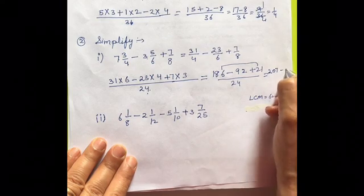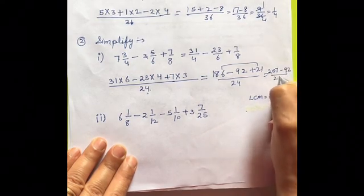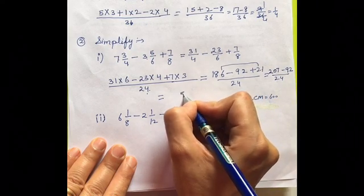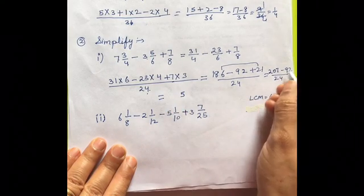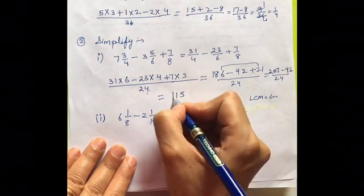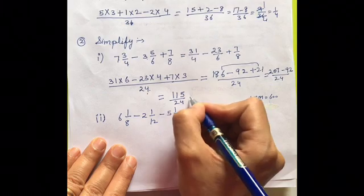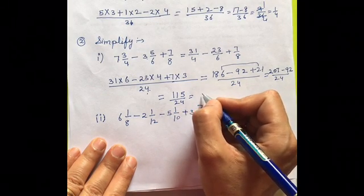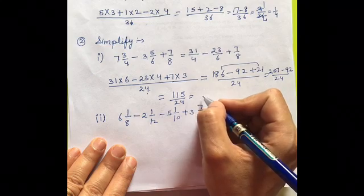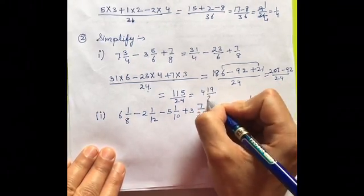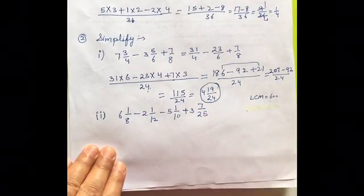It is 207 minus 92 upon 24. Now, subtract it. It is 5, 7 minus 2 is 5. Then, 10 minus 9 is 11 upon 24. Now, you will have to convert it into the mixed fraction. So, if you write this into the mixed fraction, it will be 4 19 upon 24. This is your final answer.